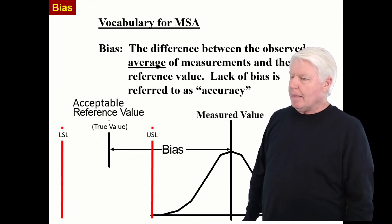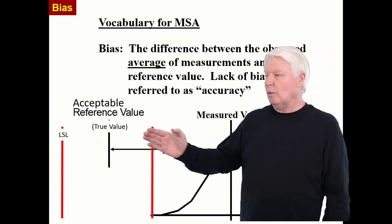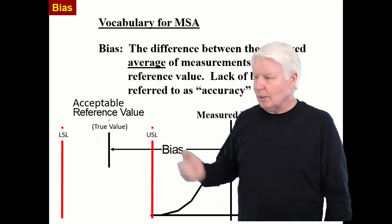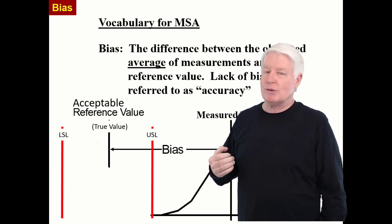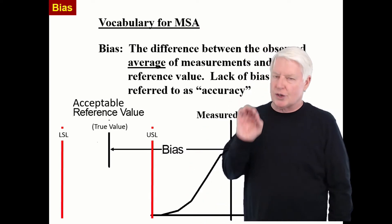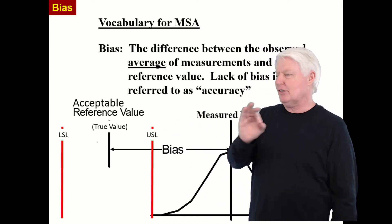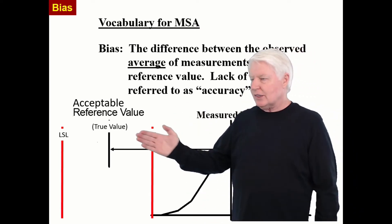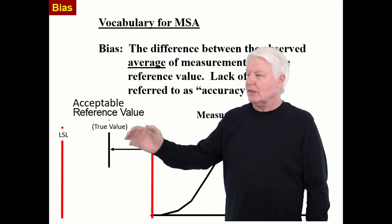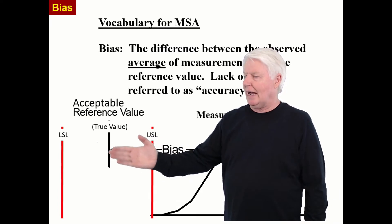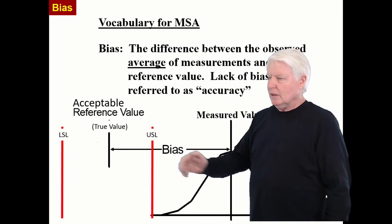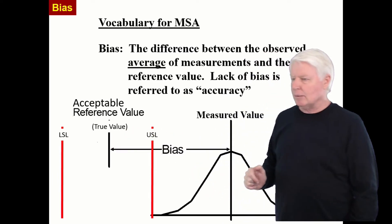By the way, measurement people do not like to call things the true value. We shouldn't call it the true value because we don't know what the true value really is — it's a mystery. No one really knows for sure exactly out to so many decimal points. So instead of calling it the true value, we should call it the accepted reference value. We measure this with the most accurate machine we have available, and it may be our standard that we're calibrating to.